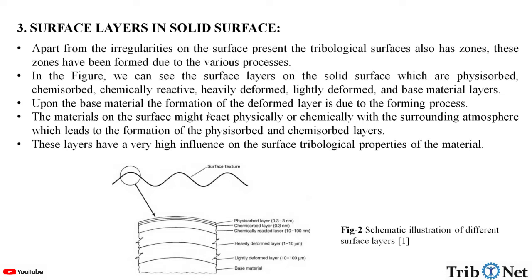Upon the base material, the formation of the deformed layer is due to the forming process. The materials on the surface might react physically or chemically with the surrounding atmosphere, which leads to the formation of the physisorbed or chemisorbed layers. These layers have a very high influence on the surface tribological properties of the material.